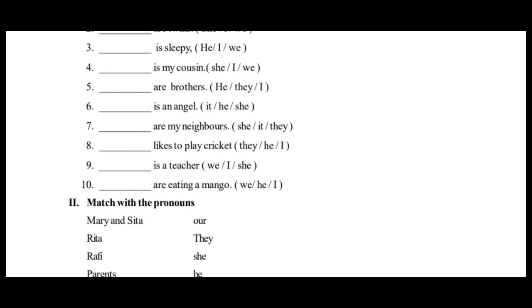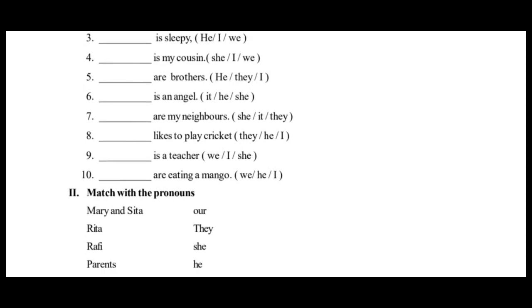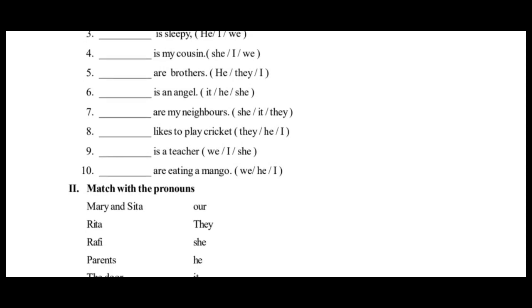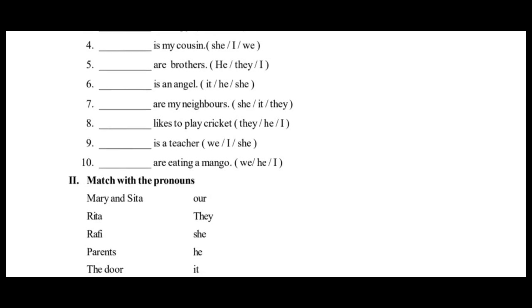Seventh one: 'Dash are my neighbors.' A plural pronoun is followed by 'are,' so the answer is they. They are my neighbors. She and it are wrong. Eighth one: 'Dash likes to play cricket.' The verb 'likes' follows a singular pronoun. They is plural, so it is wrong. He likes to play cricket is the right answer. Note that 'I' is followed by 'like,' not 'likes,' so I like to play cricket, but he likes to play cricket.